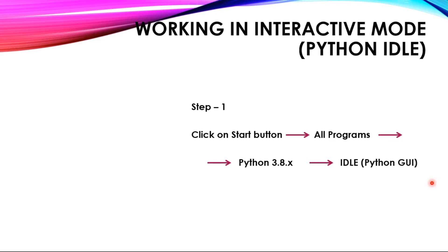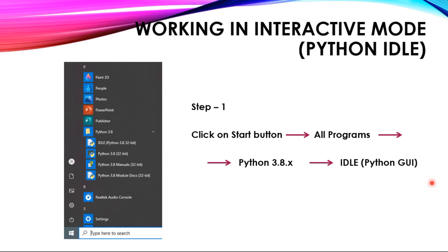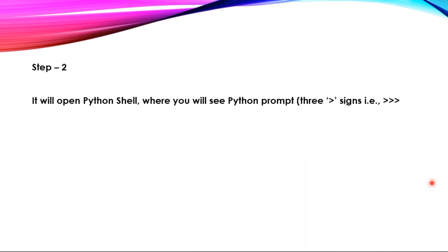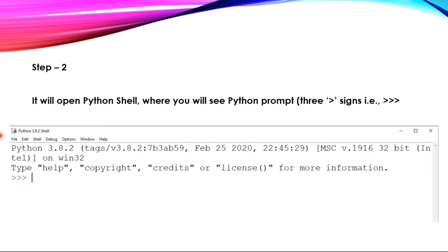Now we will see how to work. Step 1: click on the Start button, then go to All Programs, go to Python — whichever version you have downloaded — and select IDLE. Here in the image you can see: click on Start, then All Programs, and you will find Python 3.8. In that, you can see IDLE, so click here to open IDLE and your IDLE workspace will be opened. Step 2: it will open the Python shell where you will see the Python prompt — the three greater-than symbols. Wherever you see that symbol, you can type your command there. In the screenshot you can see the Python shell window and the symbol indicating where you should write your command.